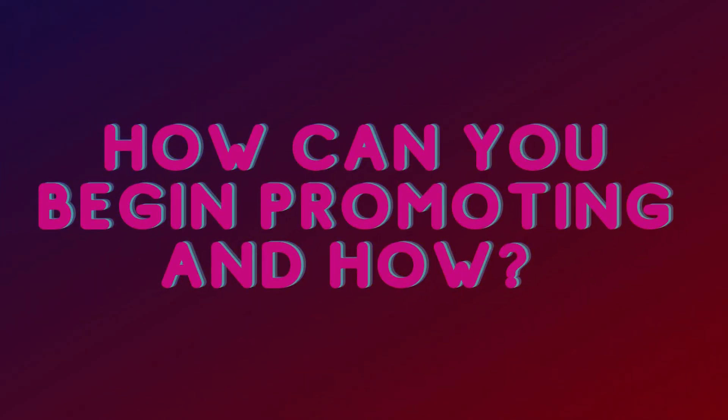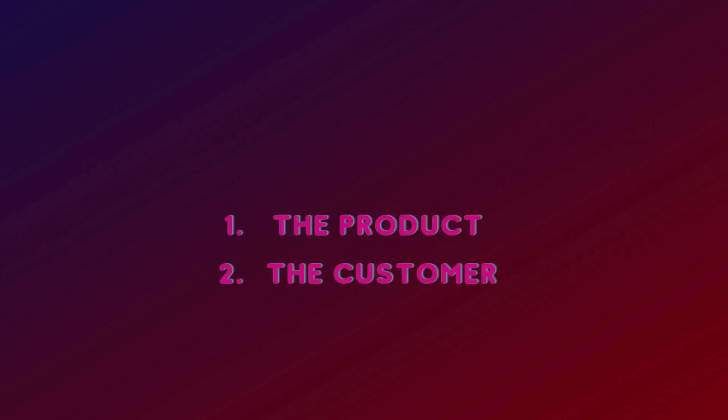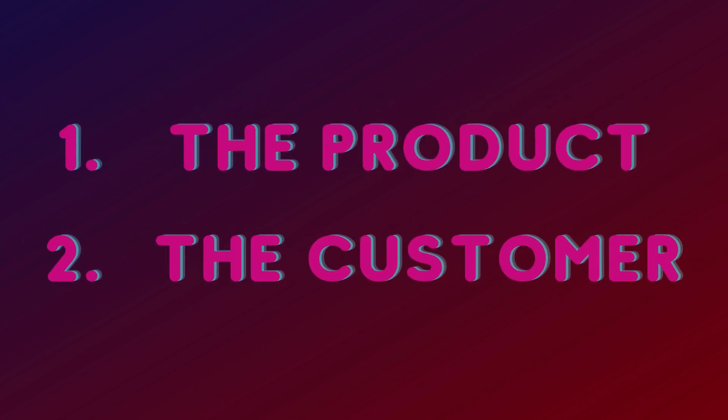Now the question is, how can you begin promoting? Now that we know what we need to promote, the first thing you have to do is to understand what the product is — for example, the specifications of the phone: RAM, camera quality, storage, and the rest of the features.